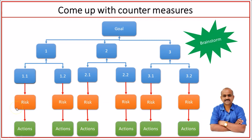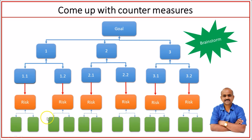For each potential risk or problem identified at the fourth level, brainstorm within the team and come up with possible countermeasures, risk mitigation, or preventive actions. These actions are associated with the corresponding risks, meaning we have multiple actions to address each identified risk. Whenever a risk occurs, we undertake these actions to prevent or remedy it. We show these countermeasure actions at the fifth level.